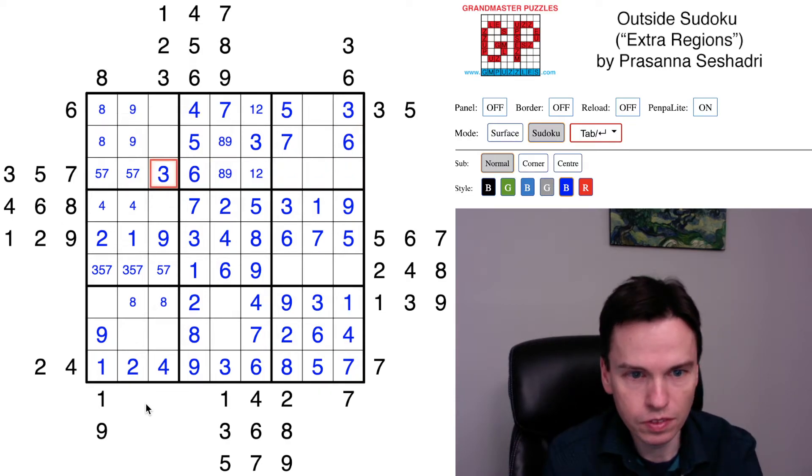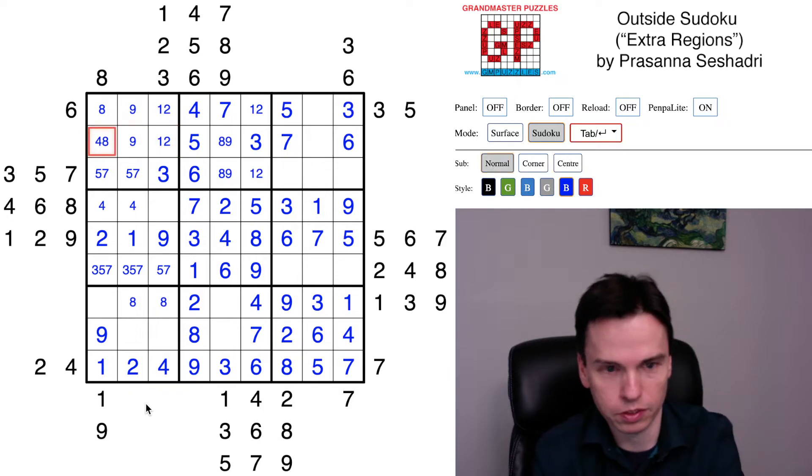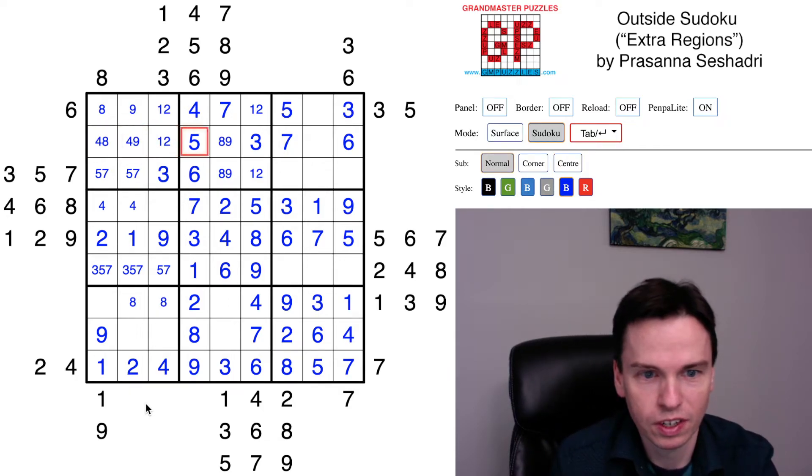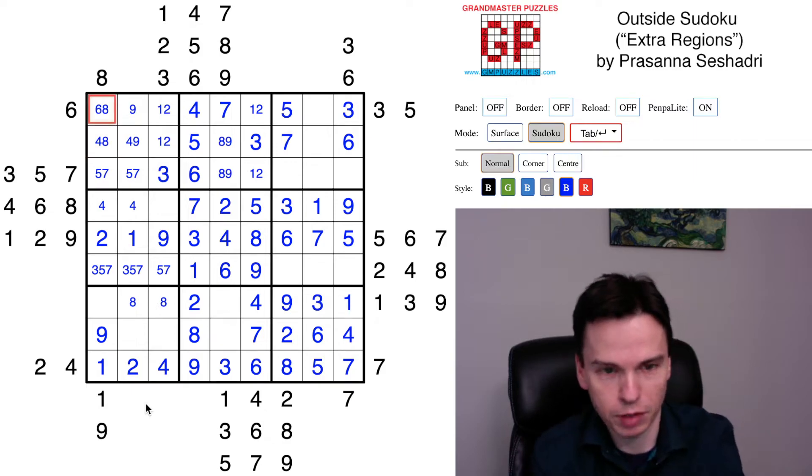4 and 6 to go, but there's a 6 on the left in this first row, so 4 above, 6 below, 6 now in the middle. That 4 is gonna have to work around this 1, 2 clue.